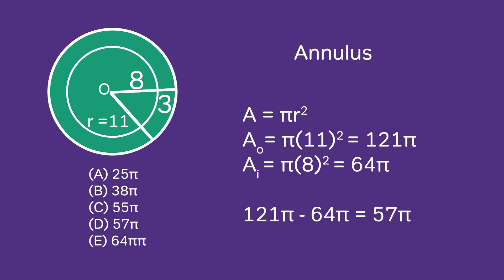And then when we do 121 minus 64, we get 57π as the difference. This is the area of the annulus, the area of the circular path around the garden, and this is answer choice B.